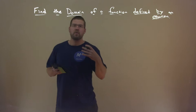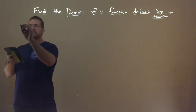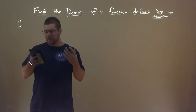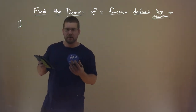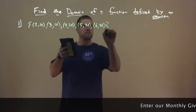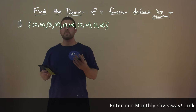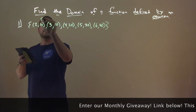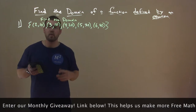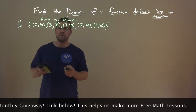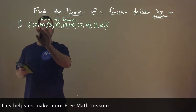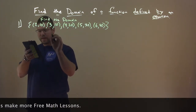So let's go through a little example. Number one: we have the following ordered pairs, and we want to find the domain. The domain is going to be the input — all the input values, the X values. So the domain is a set of numbers.